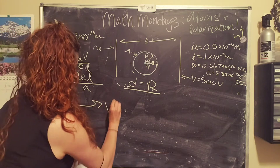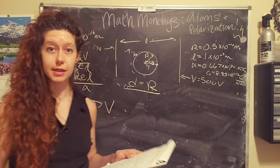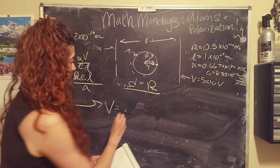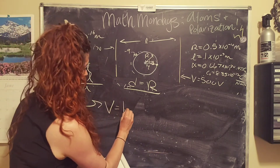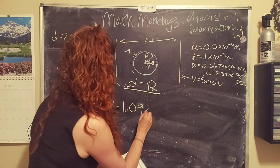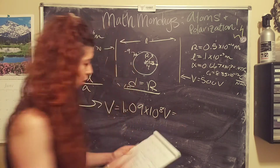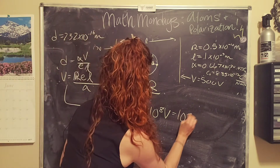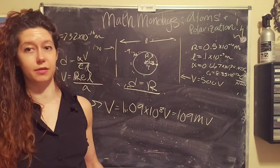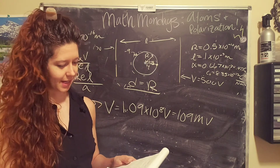When you plug in the numbers — and I trust that you know how to use a calculator probably better than I do at this point — you get a voltage of 1.09 times 10 to the 8th volts, or 109 megavolts, or million volts. Mega because we like to be lazy — technically that's the term.